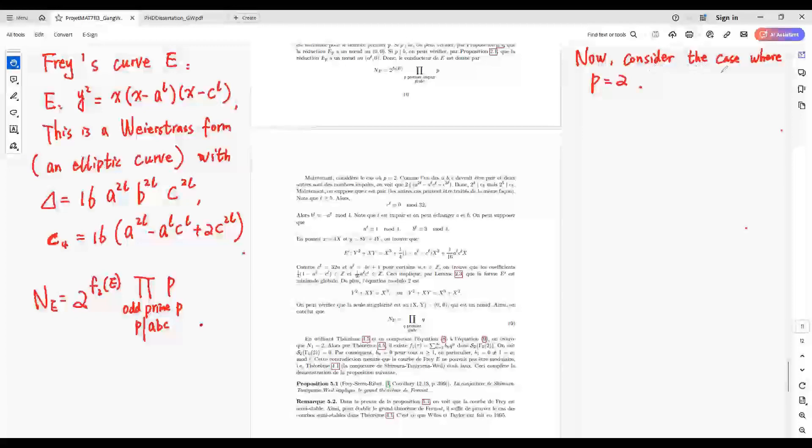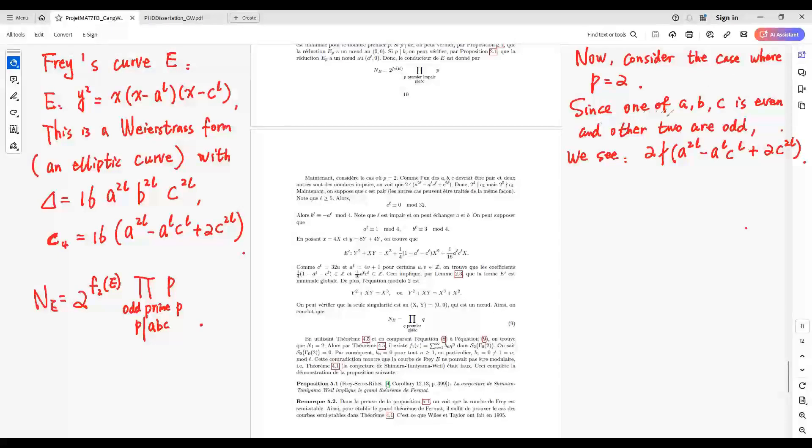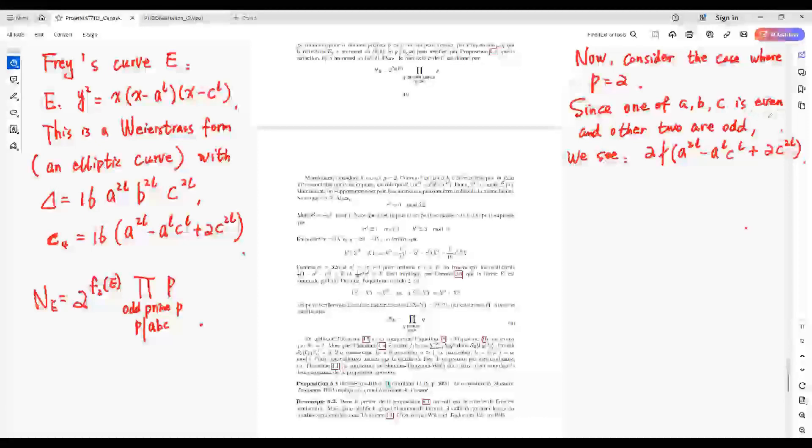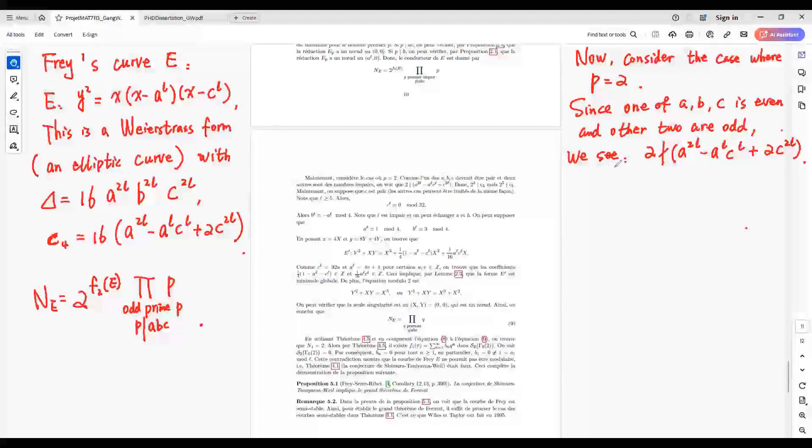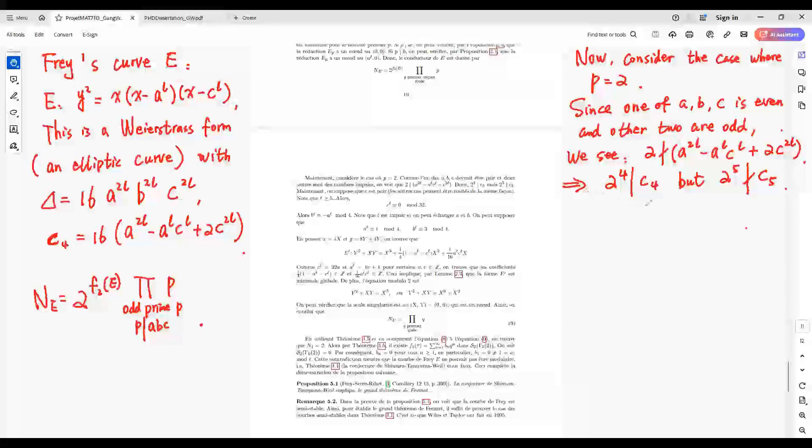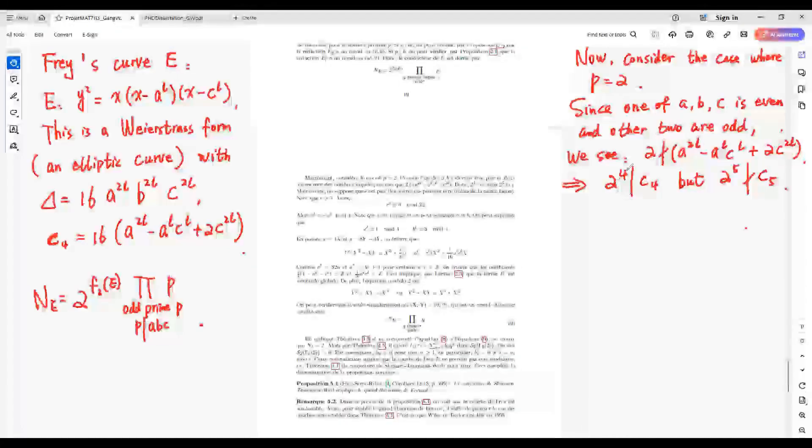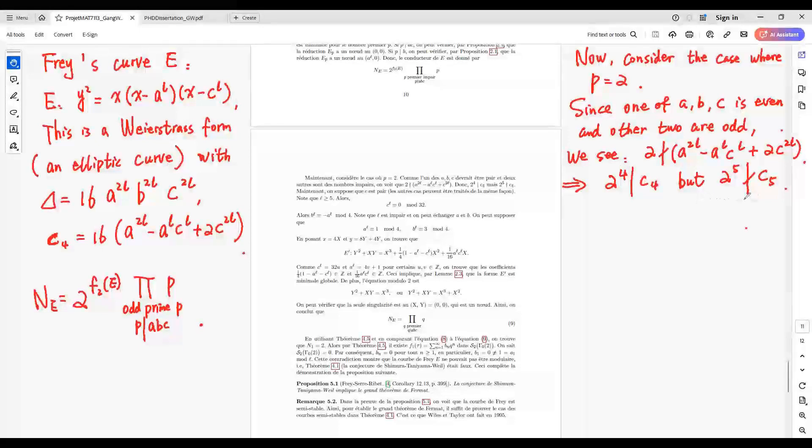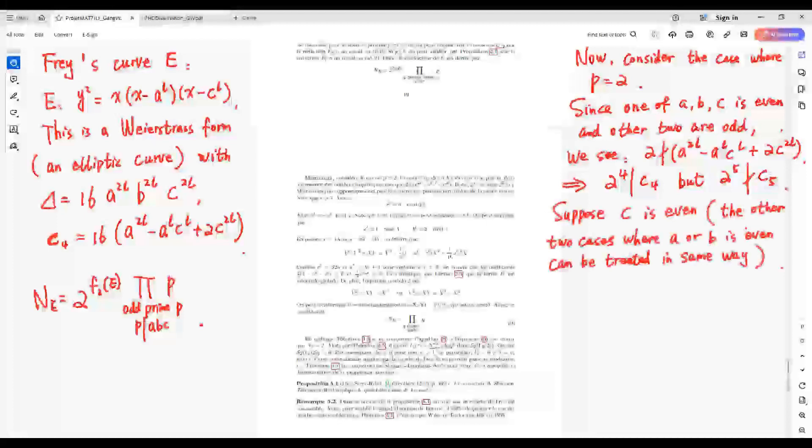Now, consider the case P equals 2. Since one of A, B, C is even and the other two are odd, we see that this factor is not divisible by 2. This implies C4 given by this one is divisible by 2^4 but cannot be divisible by 2^5.